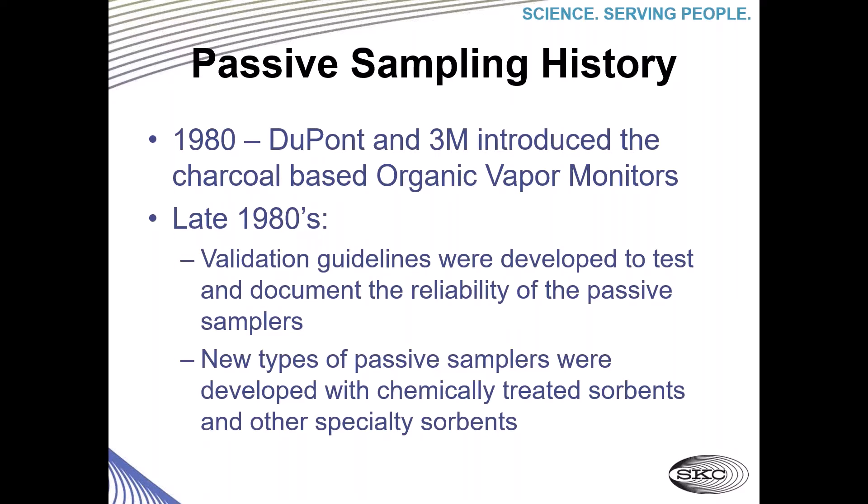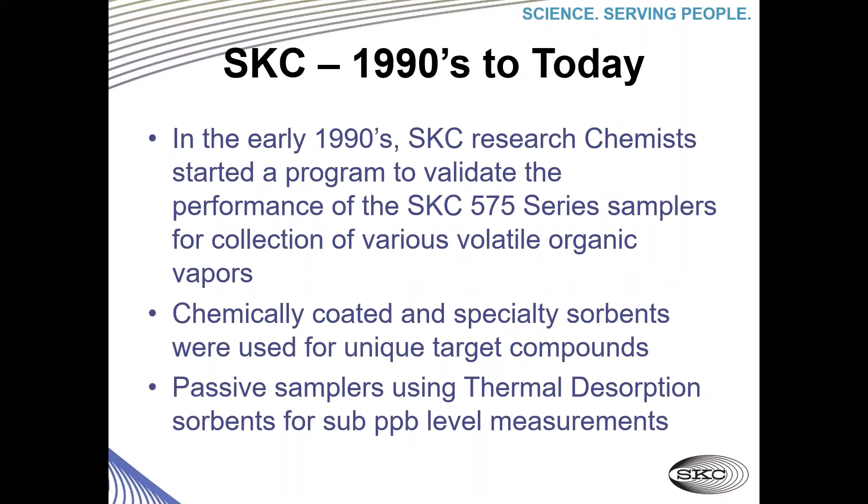A little bit of passive sampling history. In 1980, DuPont and 3M introduced a charcoal-based organic vapor monitor. In the late 80s, validation guidelines were developed to test and document the reliability of passive samplers. During this time, new types of passive samplers were being developed, as well as chemically treated sorbents and other specialty sorbents. In the early 1990s, SKC research chemists started a program to validate the performance of the SKC 575 series samplers for a collection of various volatile organic vapors. This program continues through today. They were also able to develop chemically-coated and specialty sorbents, and passive samplers are now being used with thermal desorption sorbents for sub-PPB-level measurements.